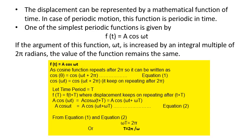Let time period be denoted by capital T. So f function will be f(t) equals f(t+T), where displacement keeps on repeating after t plus T. That means A cos(omega t) equals A cos(omega(t+T)), which means A cos(omega t) equals A cos(omega t + omega T). From the first equation and second, omega T equals 2π, which means T equals 2π by omega.